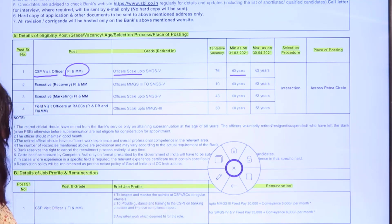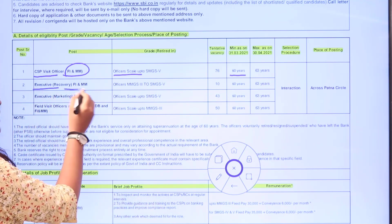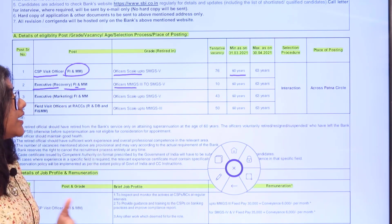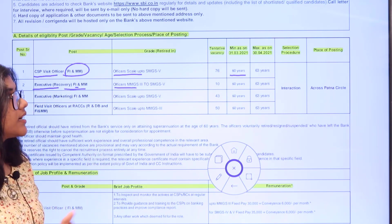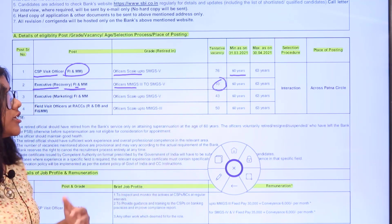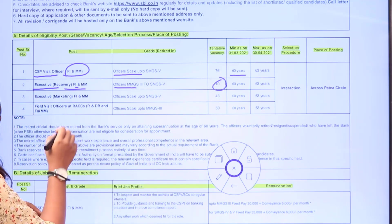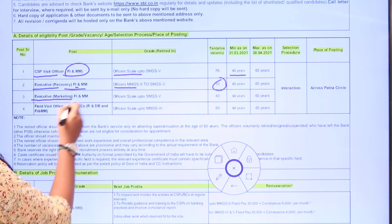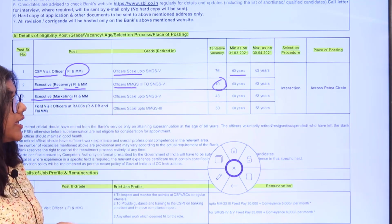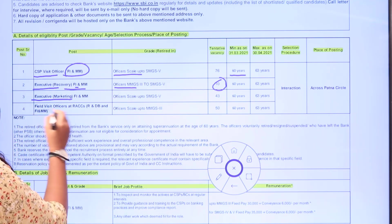For Executive Recovery FI and MM, officers MMGS to SMGS, there are 10 tentative vacancies with the same age limit of 60 to 63 years. Executive Marketing FI and MM, officers scale up to SMGS, has 43 vacancies. Field Visits Officer at RACC, assist officer scale up to MMGS, has 50 vacancies.